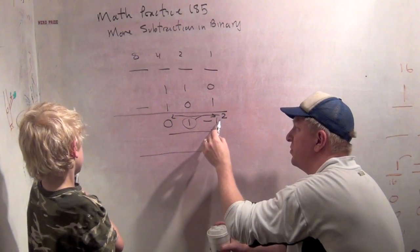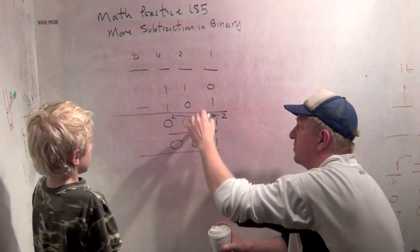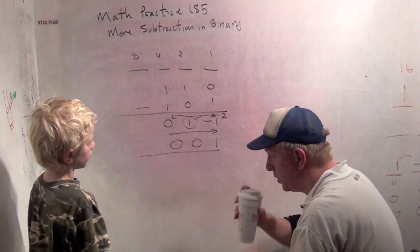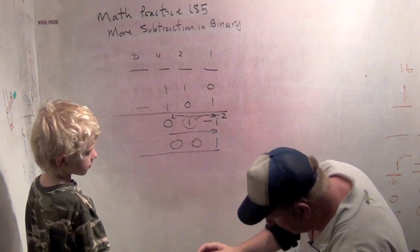And now we have two minus one, which is one. So we get zero, zero, one. And is six minus five equal to one? Yeah. It is. Okay. So let's do one example.